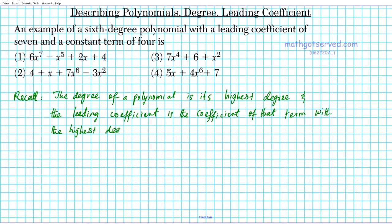What we're going to do in this question is find the degree, leading coefficient, and constant term of each of these polynomials. Then we'll see which one matches the description of having a sixth degree classification, a leading coefficient of seven, and a constant term of four.